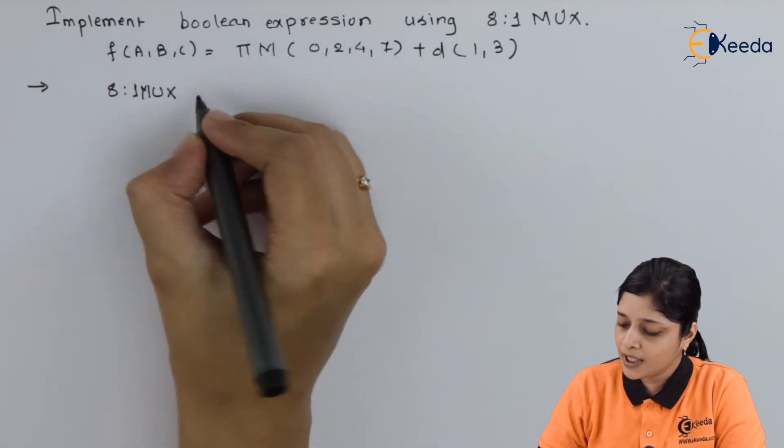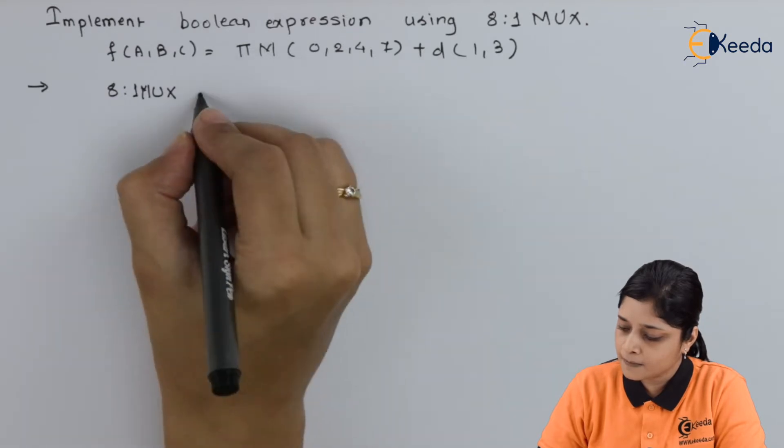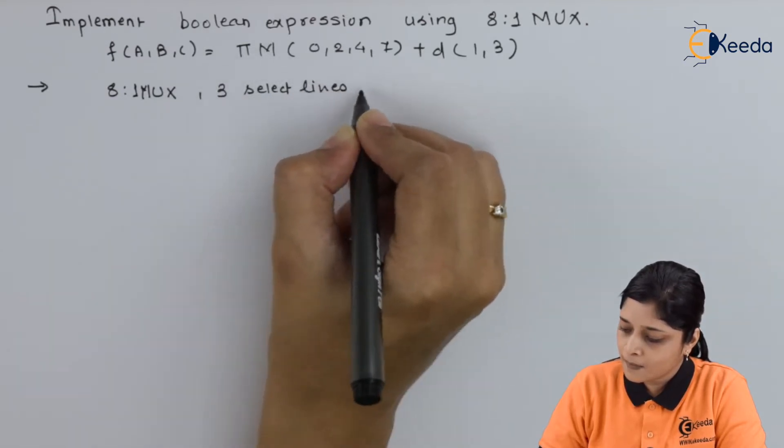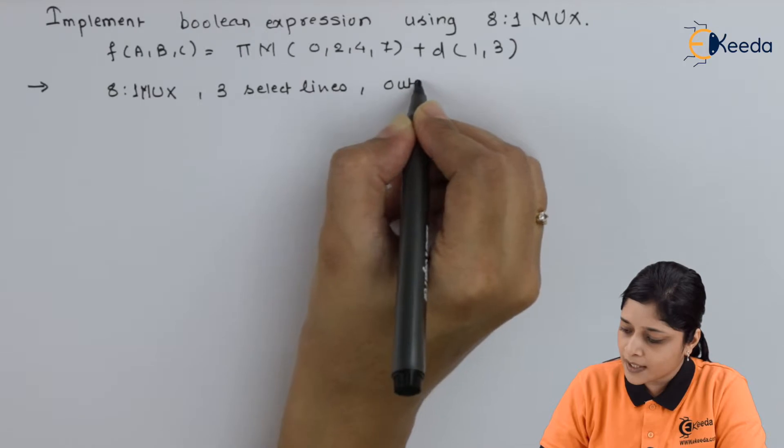And it has three select lines and output you are getting as only one.